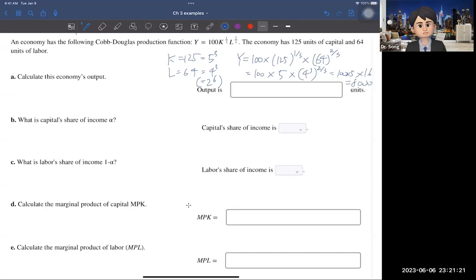Now, what is the capital share of the income, alpha? I told you, by having this Cobb-Douglas production function, Y equals A times K to the power of alpha, L to the power of one-minus alpha.